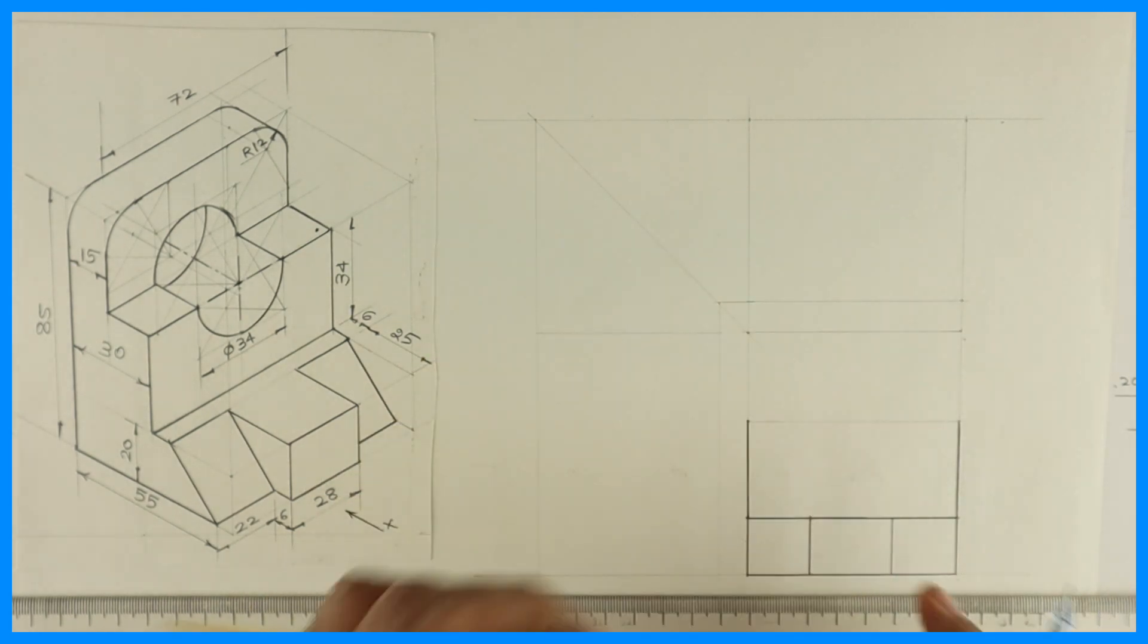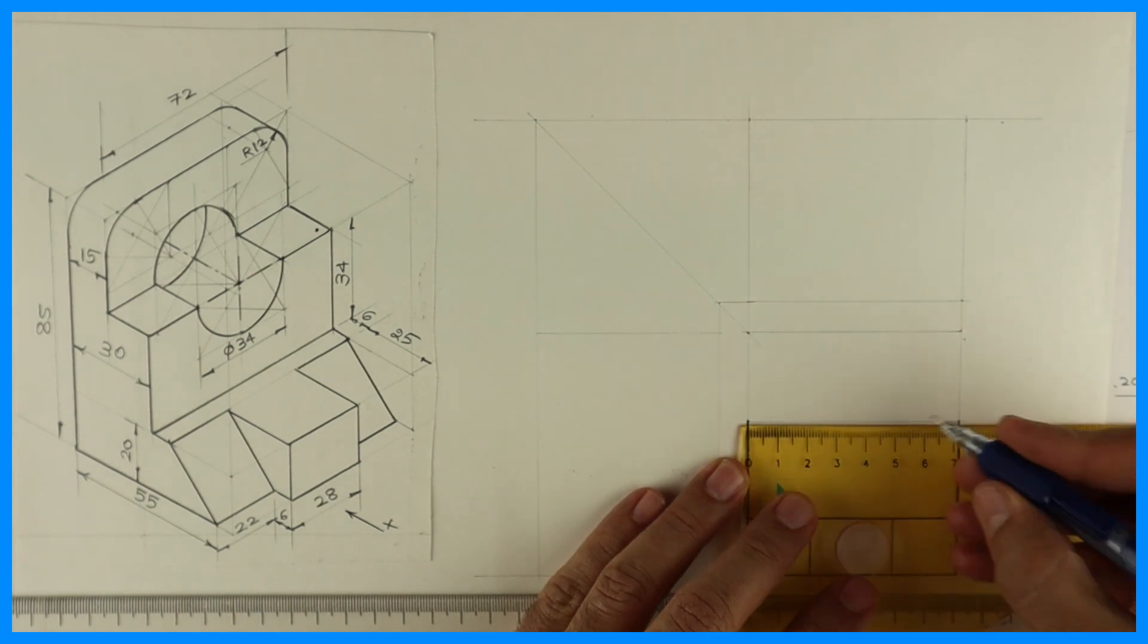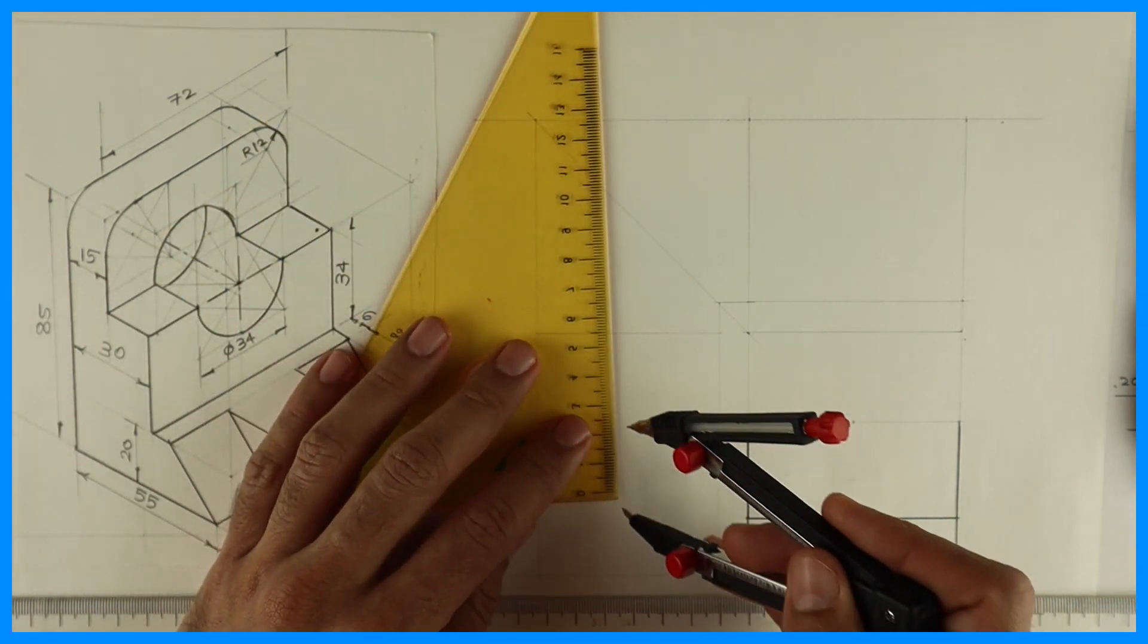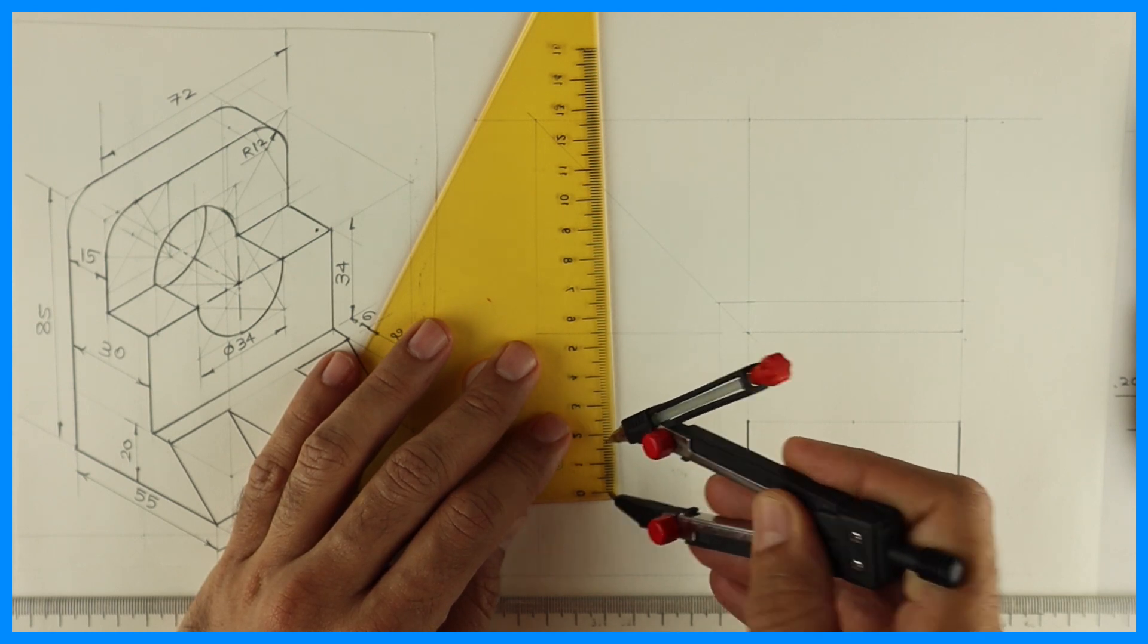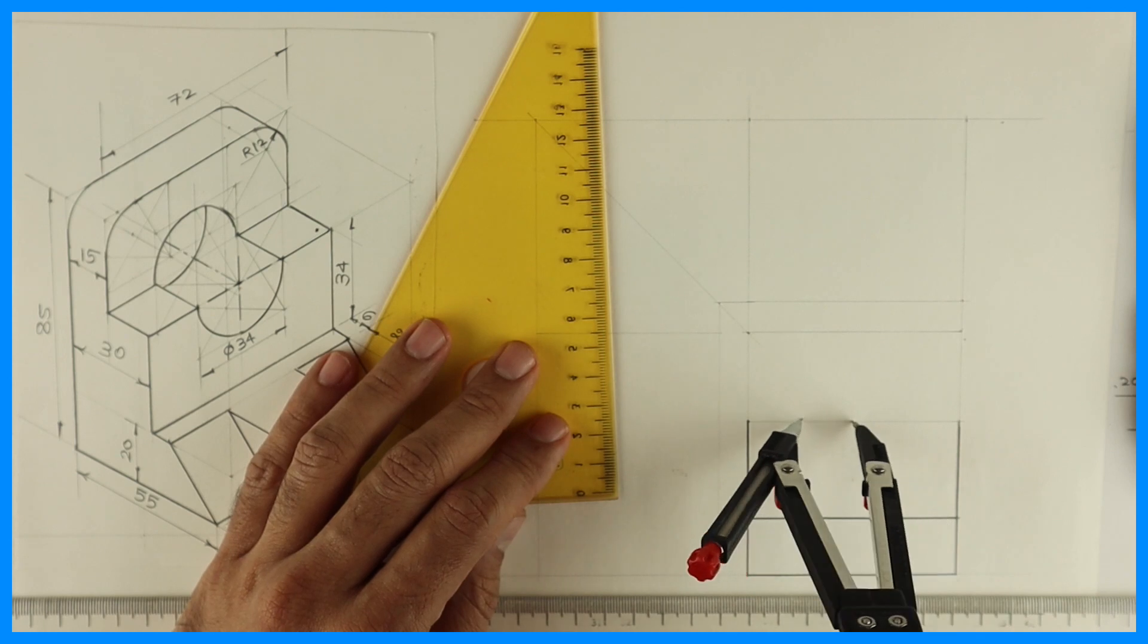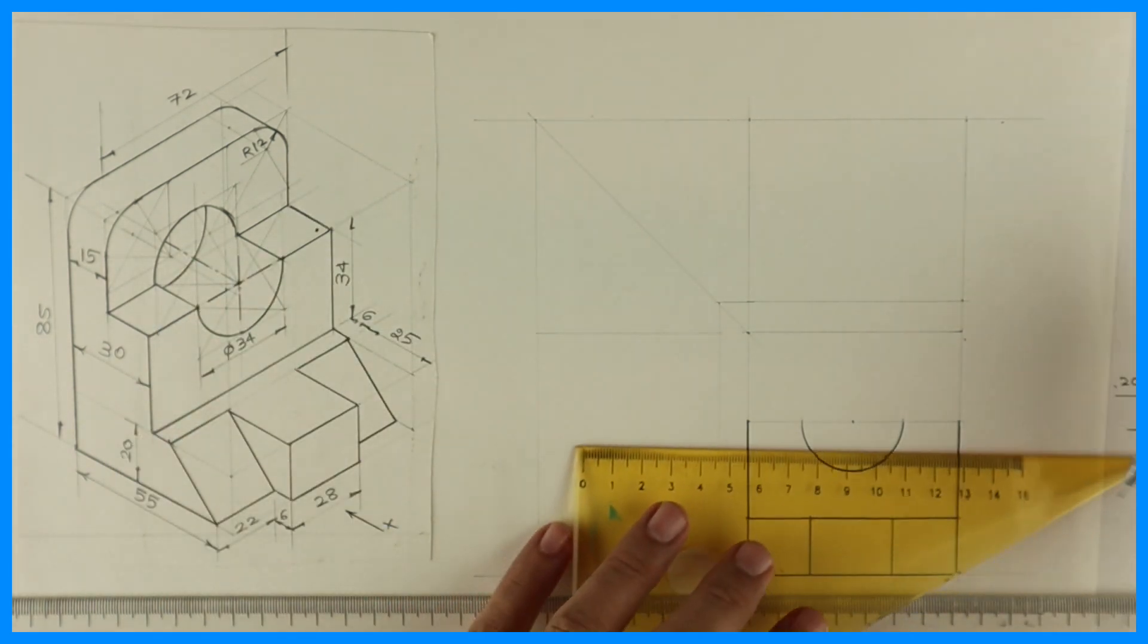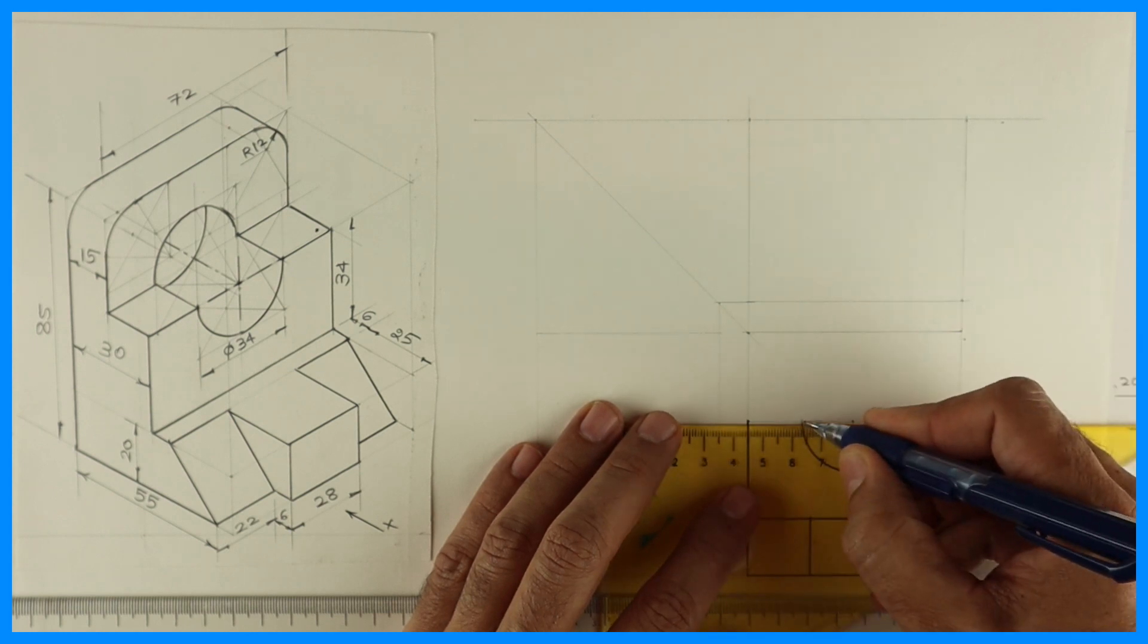This is also 34. Then you take the center point, 72 half of that would be 36, and from that point you can draw circle of radius 17. I can draw full circle also, but initially I'm doing only half circle.